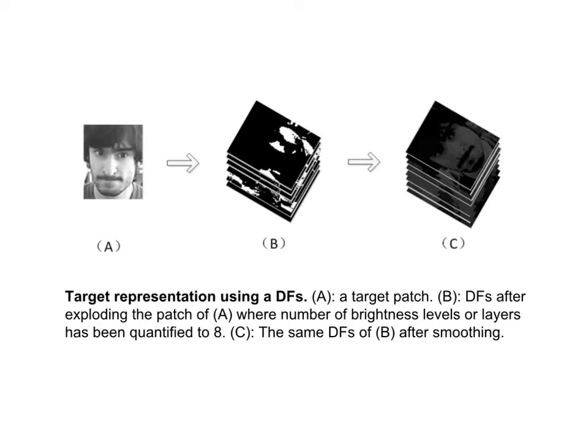However, Haar-like features used in an ML tracker seem too simple, and the classifier often contains thousands of rectangle features for good performance. A large number of features leads to high computation costs in training and detection phases.